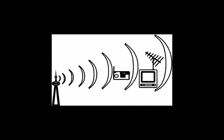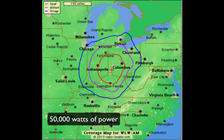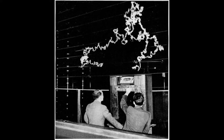Of course, the more power, the larger the electromagnetic field or signal, as it is called. For instance, WLW radio in Cincinnati, Ohio broadcasts with 50,000 watts of power, which covers most of the upper Midwest of the United States. Conversely, poor little WDAO at 1,000 watts barely covers the city limits of Dayton, Ohio. So the more power, the more electromagnetic energy created.